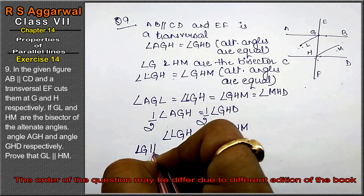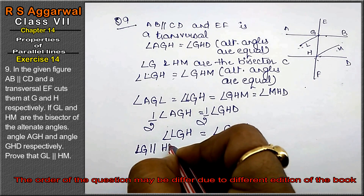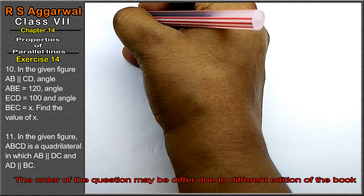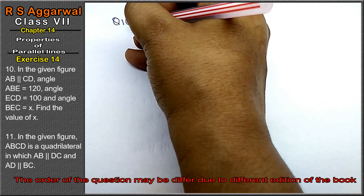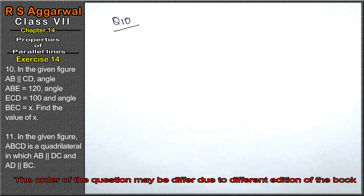So angle LGH equals to angle GHM. Since these two are equal, that means GL is parallel to HM. Let's do question number 10 of exercise 14, that is properties of parallel lines.